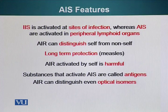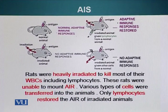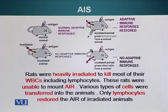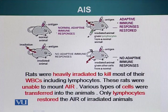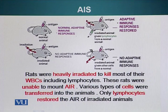Substances that can activate the adaptive immune system are also called antigens. Even if antigens are slightly different, they can activate different types of immune cells. A simple experiment: a rat was irradiated to kill most of its white blood cells, including the lymphocytes. These rats were unable to mount an adaptive immune response. When these rats were supplemented with different types of cells to see what type of cell would restore adaptive immune response function, it turned out that only lymphocytes are the cells that can restore the adaptive immune response of these irradiated rats.